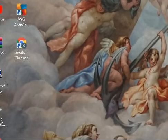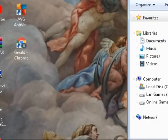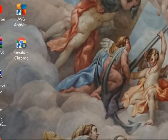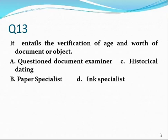Watermarks are translucent designs embedded in the course of manufacture of the paper. Number thirteen. It entails the verification of age and worth of a document or object. The correct answer is Charlie: historical dating — the age and worth of a document.